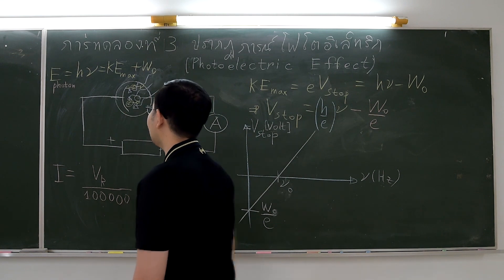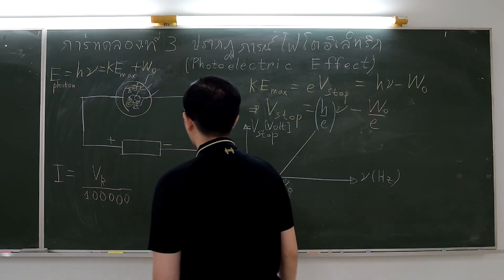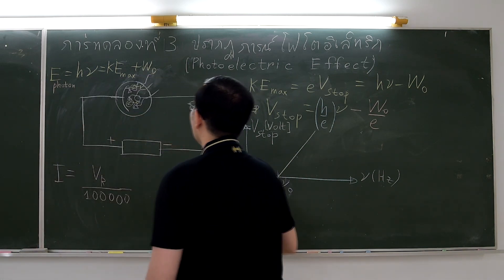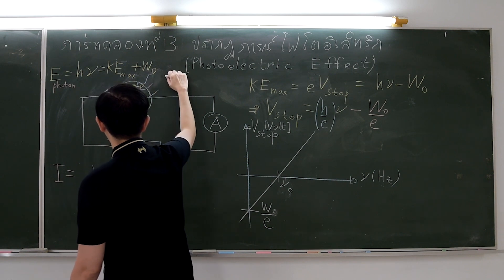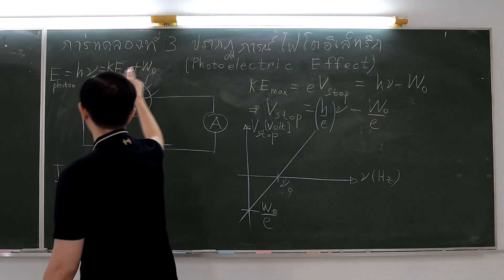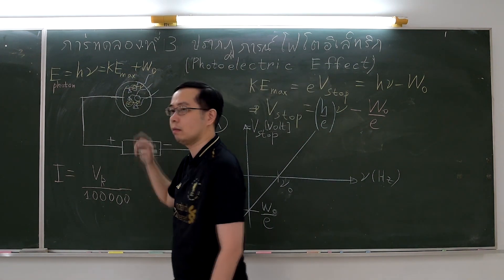When a photon hits metal, if its energy is equal to or greater than the metal's electron-binding energy, the electron will absorb the photon's energy and become a photoelectron. The kinetic energy of the photoelectron comes from the remaining photon's energy as shown in the equation.